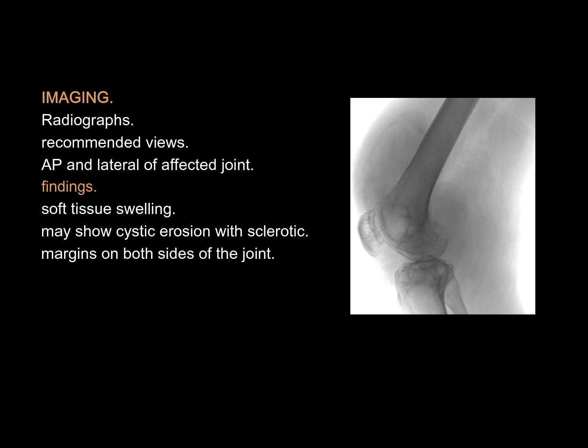Imaging — Radiographs: Recommended views are AP and lateral of the affected joint. Findings include soft tissue swelling and may show cystic erosion with sclerotic margins on both sides of the joint.